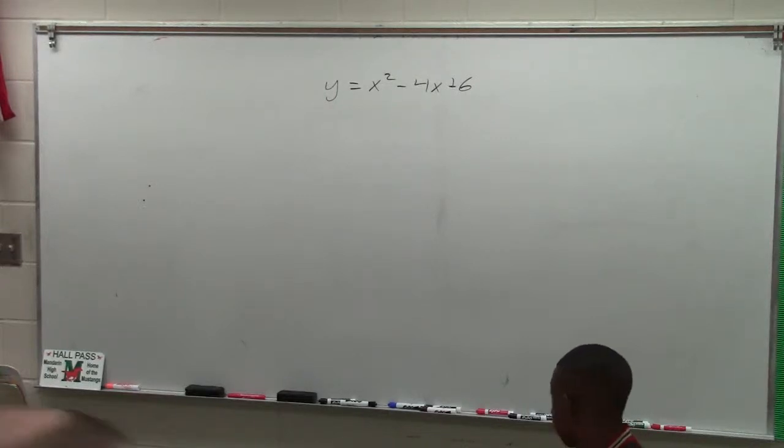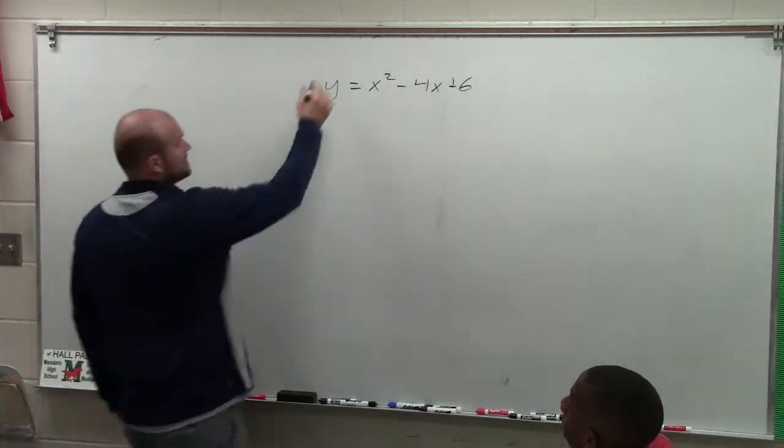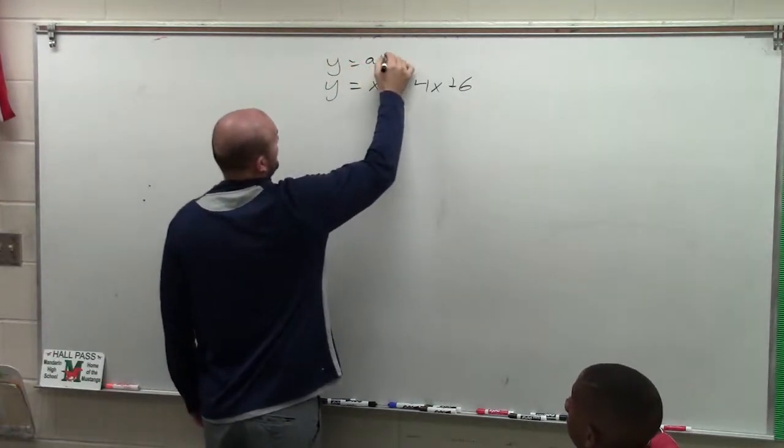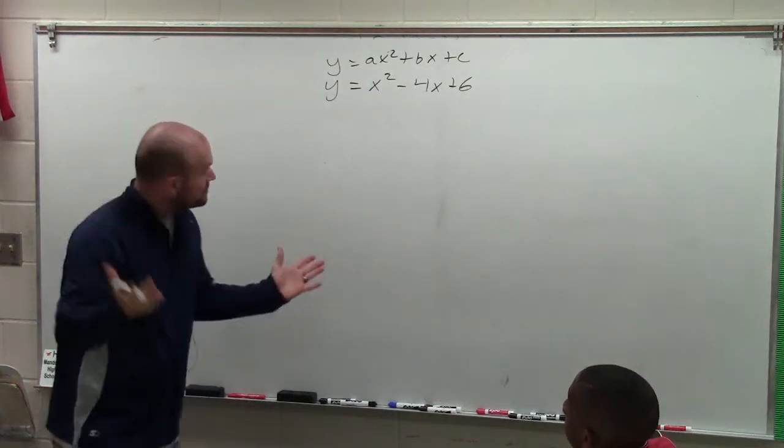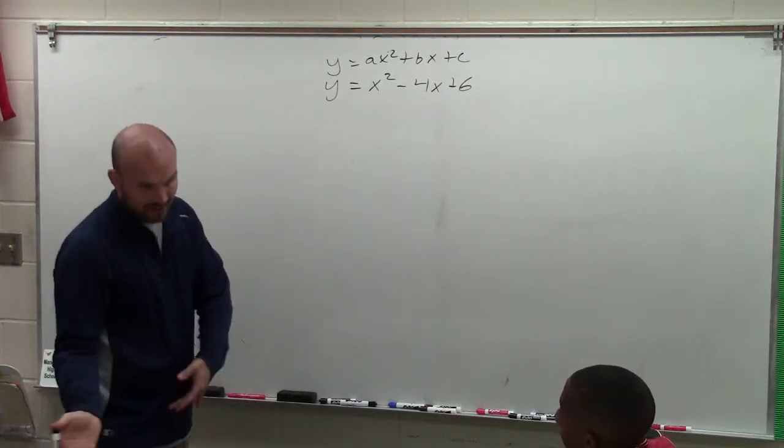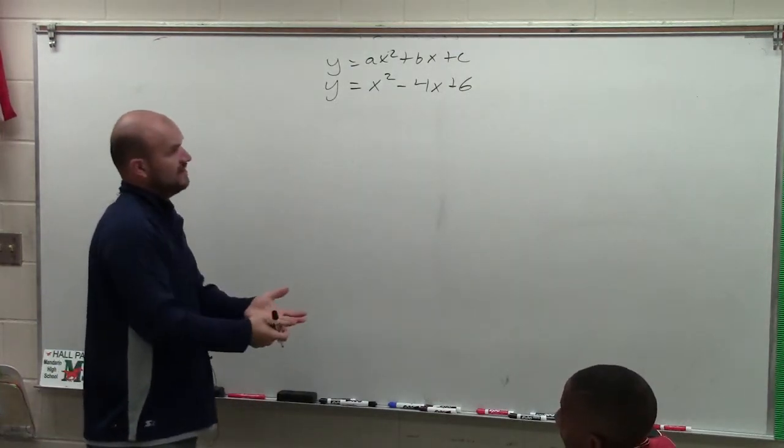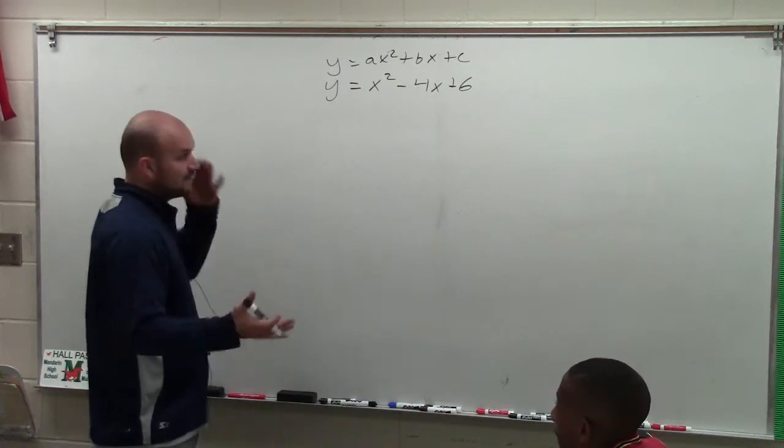So what we want to do in this case is, as you can see, this equation is in standard form, right? ax² plus bx plus c. Now, you do understand how to find the axis of symmetry, plug that point in, and find the vertex, right? So it's very basic.